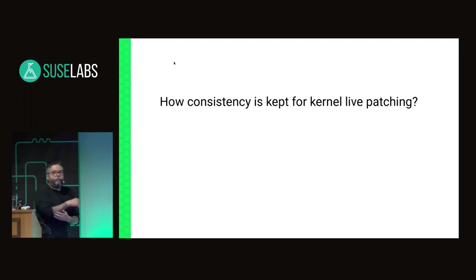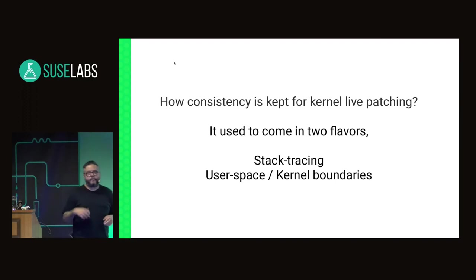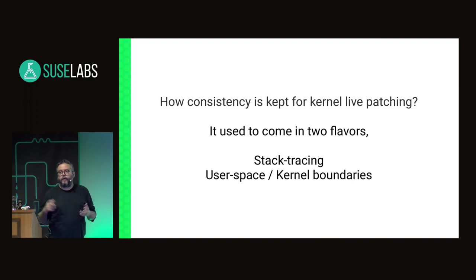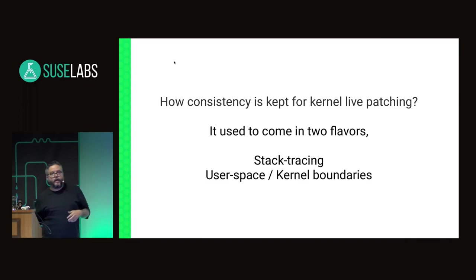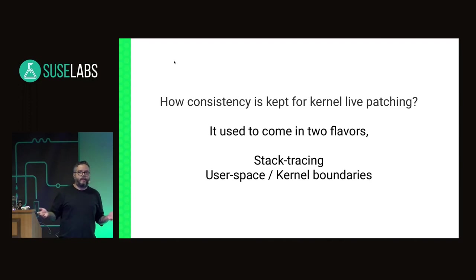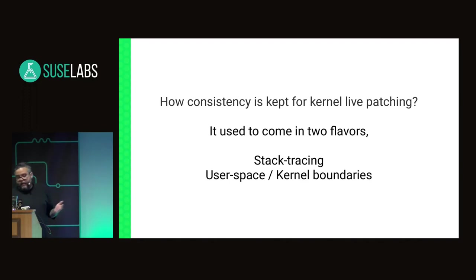How do people do it in the kernel? There are basically two flavors. One is stack tracing — you look at the stack and figure out which functions are running, and based on that you know what can be patched and what cannot. The other is creating boundaries between user space and kernel space. If all threads in a system are in user space, this means no kernel code is running, so it's actually safe to patch the kernel.